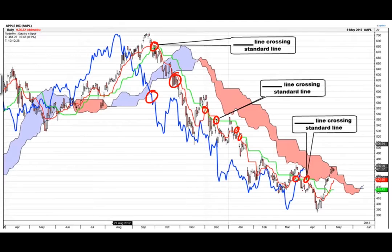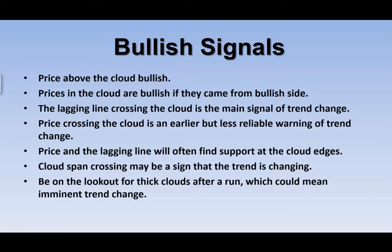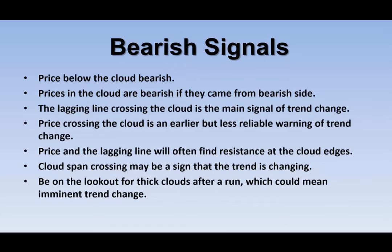Bullish signals: price above the cloud is bullish; price in the cloud from the bullish side is neutral-bullish; the lagging line crossing the cloud is the main signal of trend change; price crossing the cloud is an earlier but less reliable warning. Price and the lagging line will often support at the cloud edges. Cloud spans crossing may signal a trend change. Be on the lookout for thick clouds after a run-up — it could mean the trend is about to change.